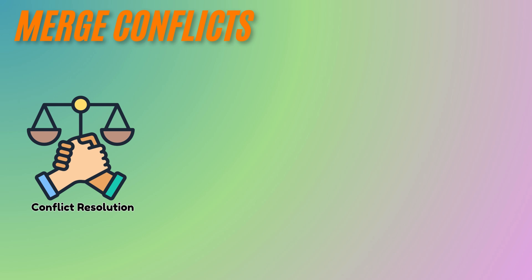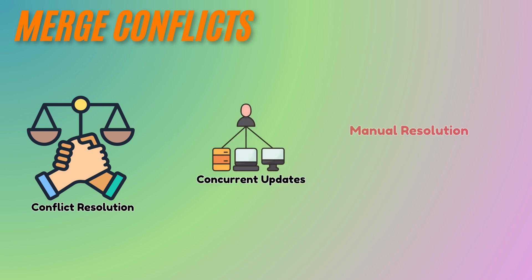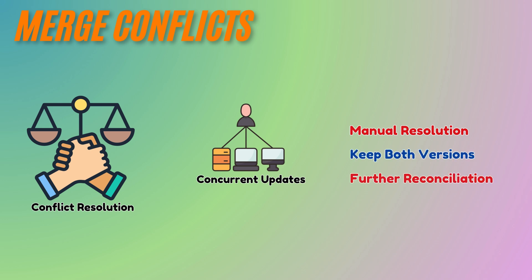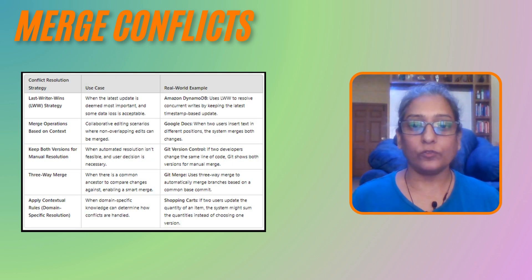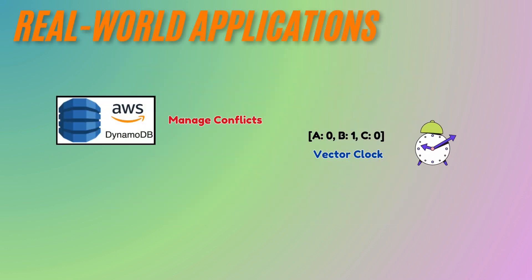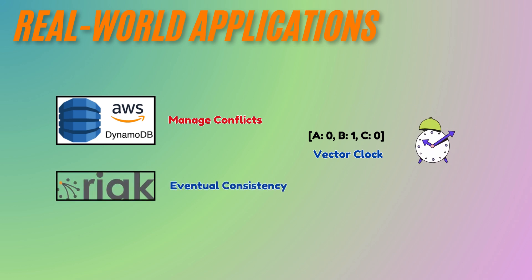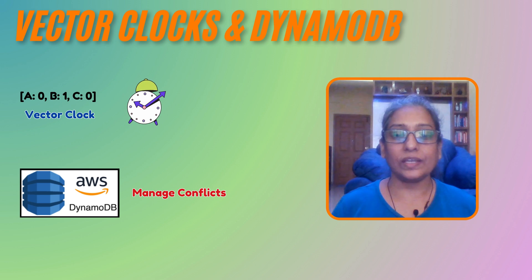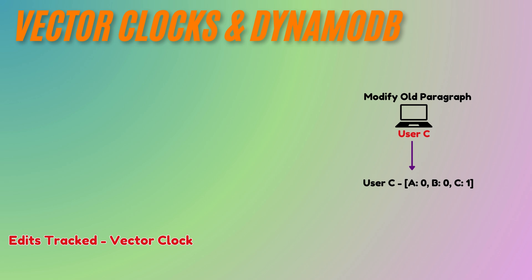To resolve conflicts due to concurrent updates, the system might prompt manual resolution or keep both versions for further reconciliation. Some commonly used conflict resolution strategies are listed here. Vector clocks are not just theoretical — they are used in real-world systems. Amazon DynamoDB employs a version of vector clocks to manage conflicts, and Riak, another distributed database, uses them for eventual consistency. In DynamoDB, each edit is tracked using a vector clock.